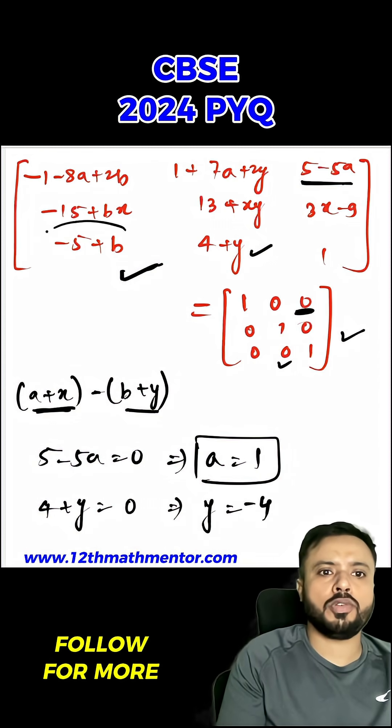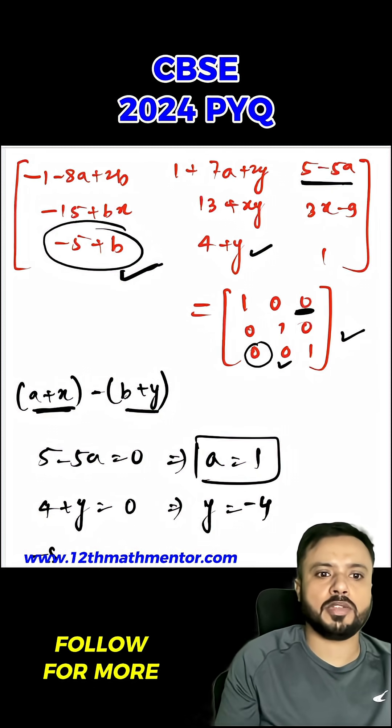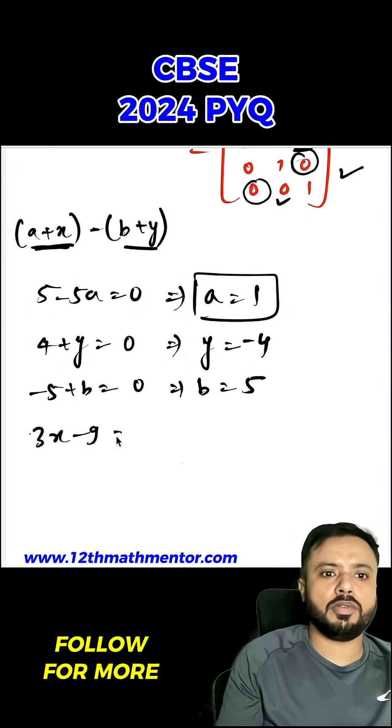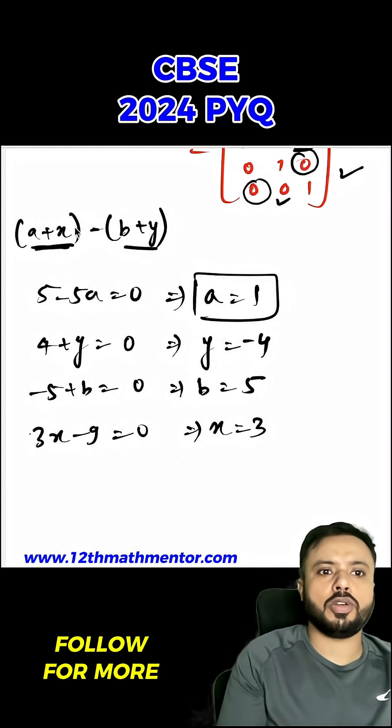Now I am going to equate -5+b to 0. When -5+b equals 0, that means b equals 5. And I am going to equate 3x-9 to 0. So 3x-9 equals 0, that means x equals 3. Now I got all of these values.